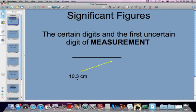It's closer to 10 than 11, not necessarily half, so I'm going to call it 10.3 centimeters. This last number is always my guesstimated digit. The certain digits and the first uncertain digit of the measurement are your sig figs.